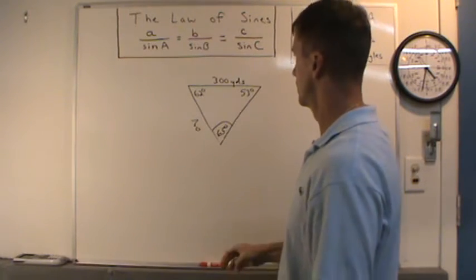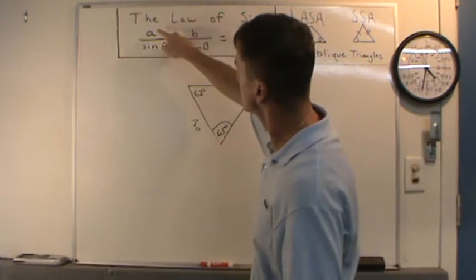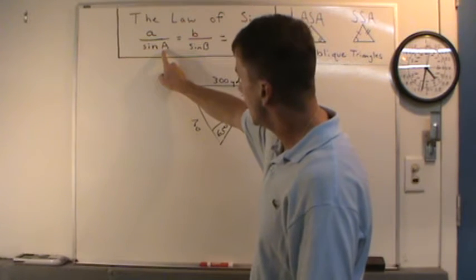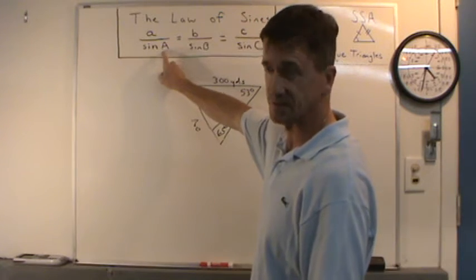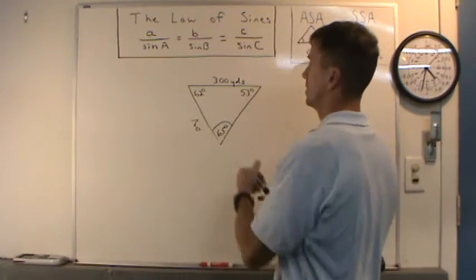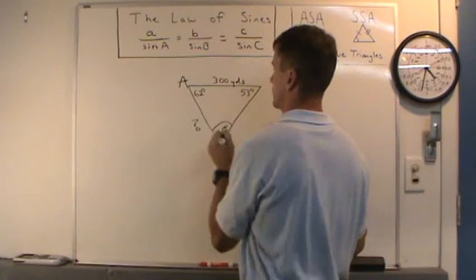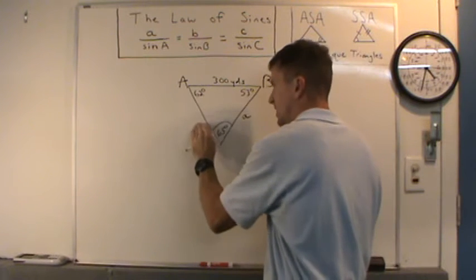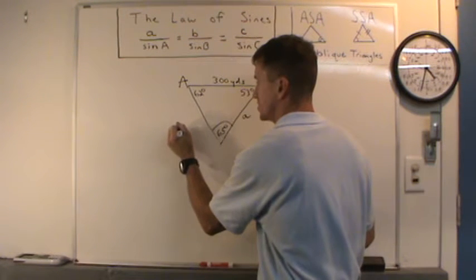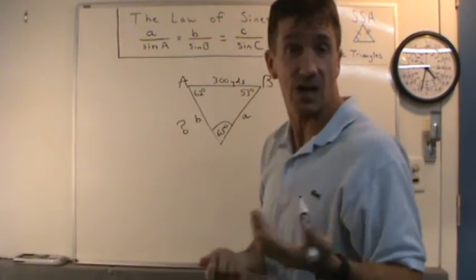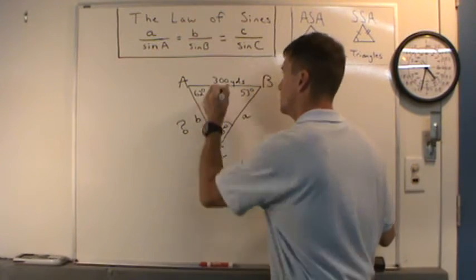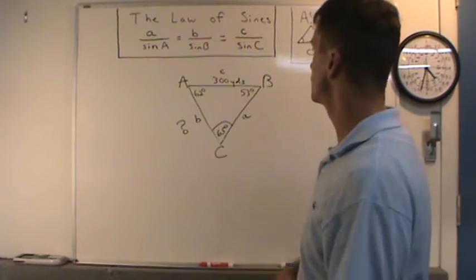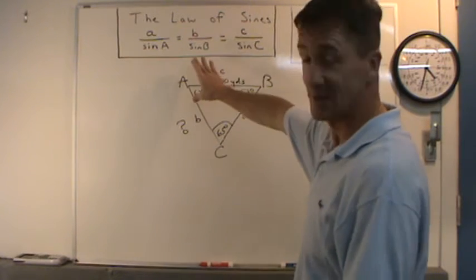Now I need to assign letters. Little 'a' represents a side, and big 'A' has to be the angle opposite that side. So I'll call this angle A, and the side opposite it is little a. I'll call this angle B, and the side opposite it — the one we're looking for — is little b. Angle C and little c round it out. Just remember: little letter is opposite the capital letter.